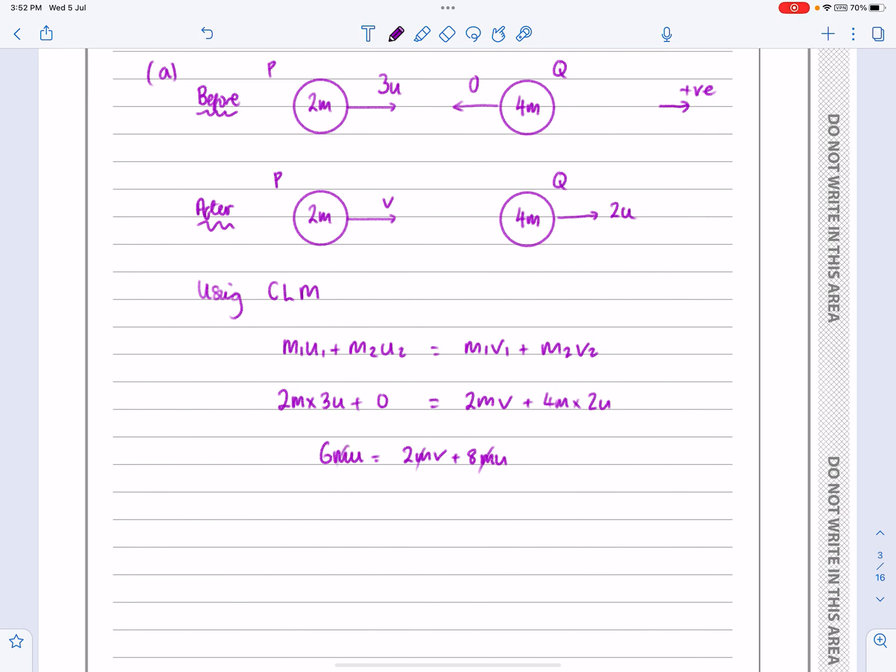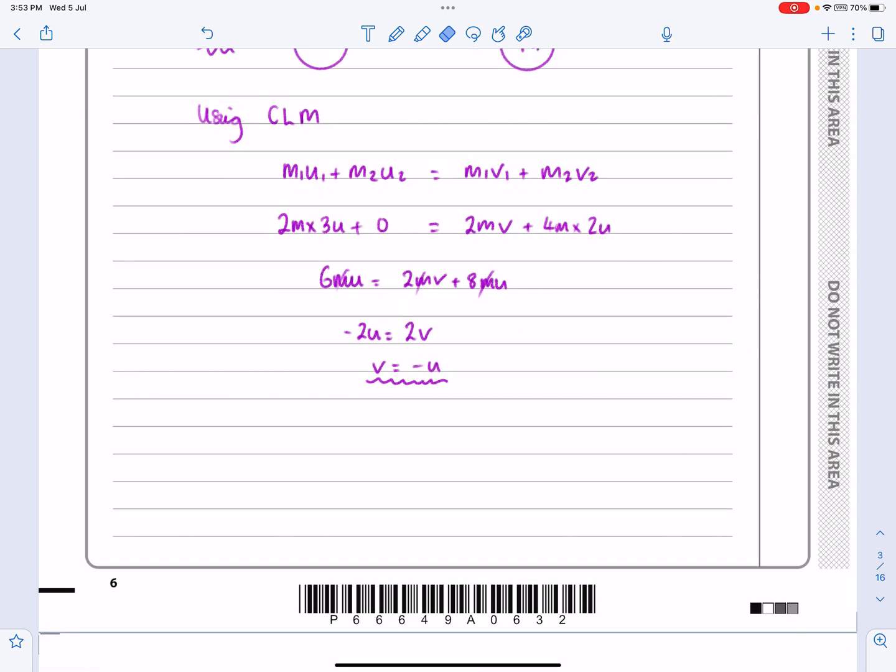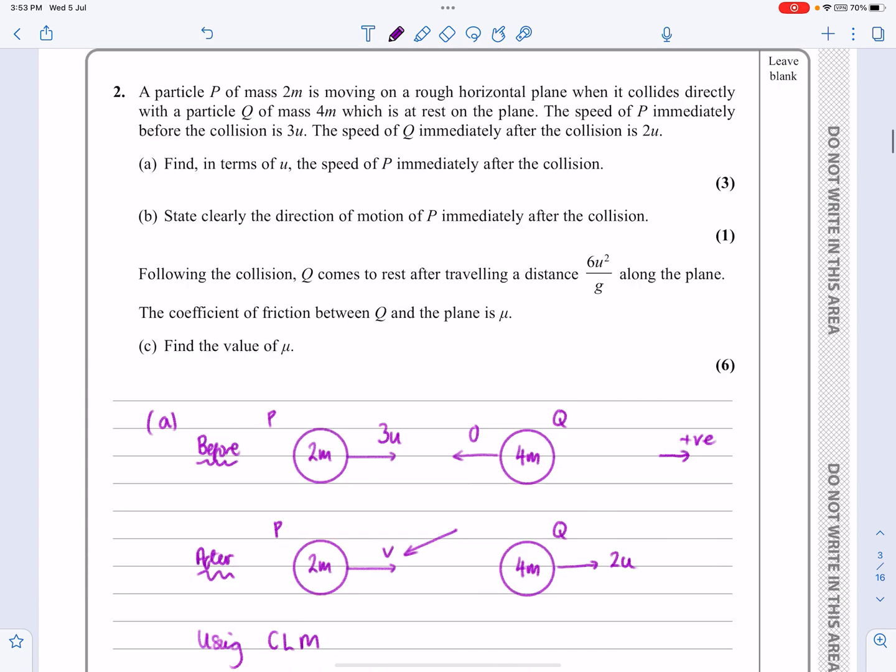I've basically got 6MU equals 2MV plus 8MU. The M's always cancel in these sorts of questions. If I rearrange all this, I get minus 2U equals 2V. So V works out to be equal to minus U here. So what that's telling me is that my assumption that it was going that way isn't actually accurate. It's going to be going that way with the speed of U. That's fine, I leave my answer as I've just done there, and they ask me to clarify that with part B of the question.